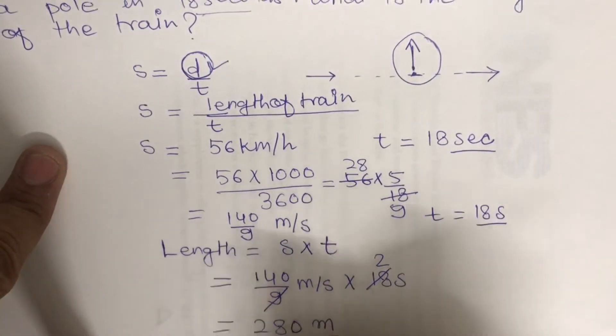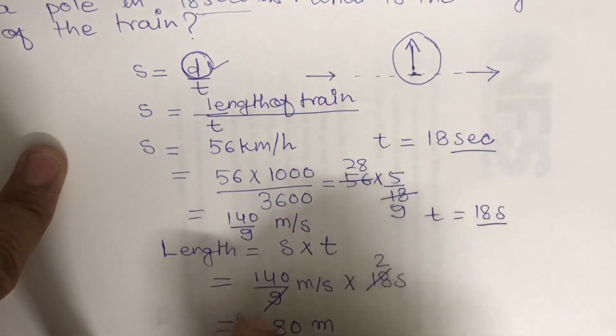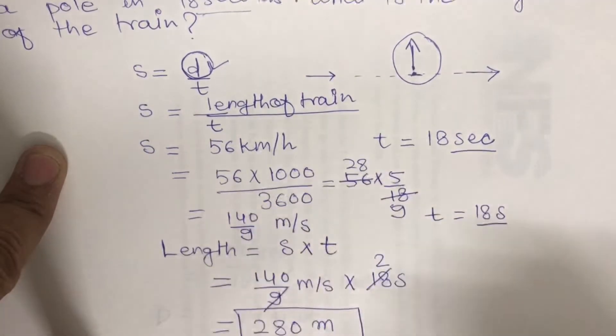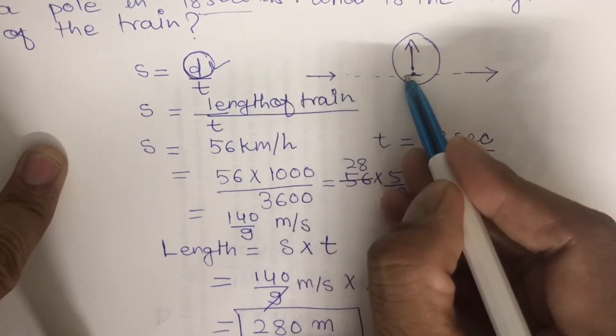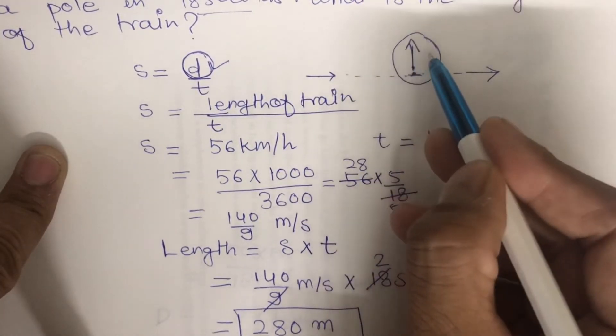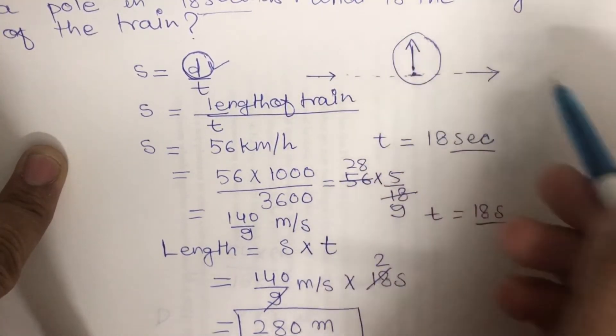The length of the train is 280 meters. This is the distance traveled by the train to cross the pole, which is actually the length of the train.